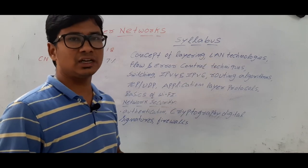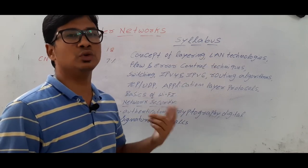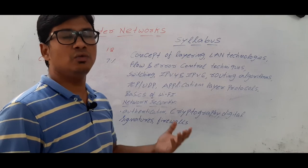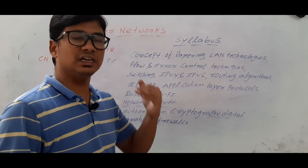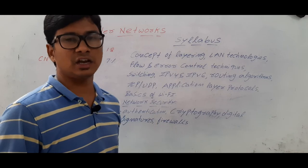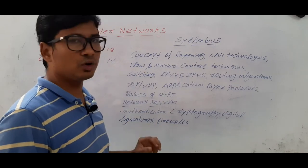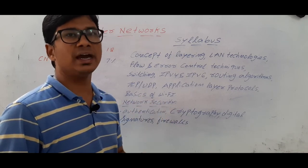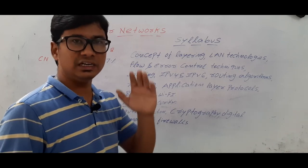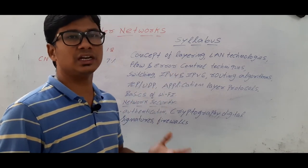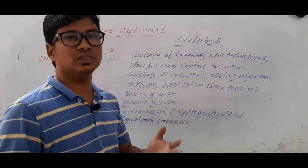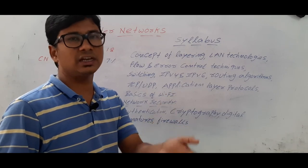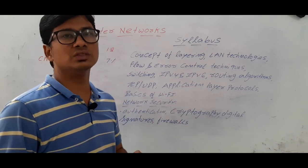Then we will discuss LAN technologies such as Ethernet, token bus, and token ring. Coming to flow control and error control mechanisms — we use these techniques in the data link layer and the transport layer. I will discuss various flow control mechanisms such as Go-Back-N, Stop-and-Wait, and Selective Repeat in detail. Then I will discuss error control techniques including error detection and error correction.